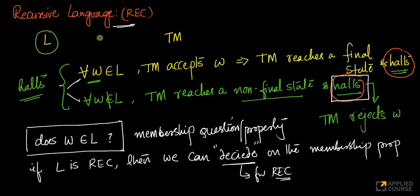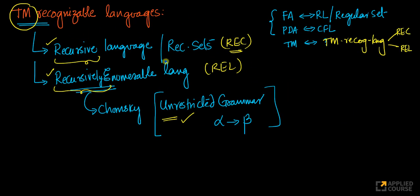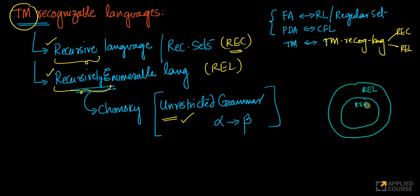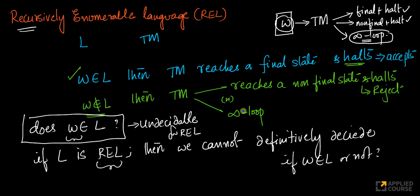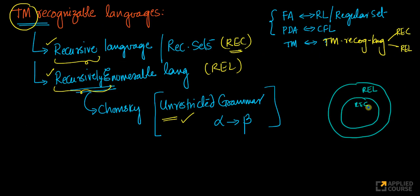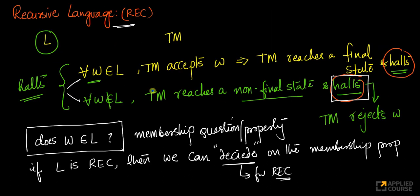Recursive languages are a subset of recursively enumerable languages — because in recursive languages you do not have the infinite loop case. Recursive languages themselves contain context-free languages, which contain regular languages, as we saw in the Chomsky hierarchy. There are two distinct language classes here.